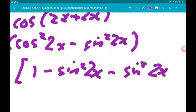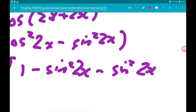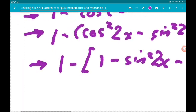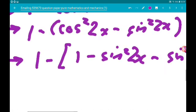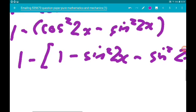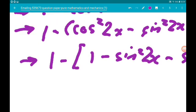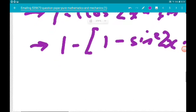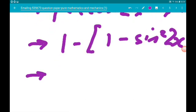Now, 1 minus 1 cancels out, so inside the brackets we've got minus 2 sin squared 2x. Remember that we have a negative on the outside, so at this point we've now got 2 sin squared 2x.